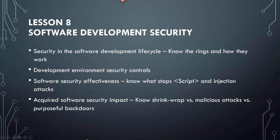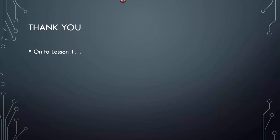Lesson 8 is the last one — software development security. Security and software development lifecycle: you have to know the rings and how they work. You only need to know two of them — ring zero and ring three. Ring three is the apps; it can't touch ring zero because that's the core kernel. Development environment security controls — know what stops scripts, know a few SQL commands for SQL injection questions, and acquired software security impact including shrink wrap code, malicious attacks, and purposeful backdoors.